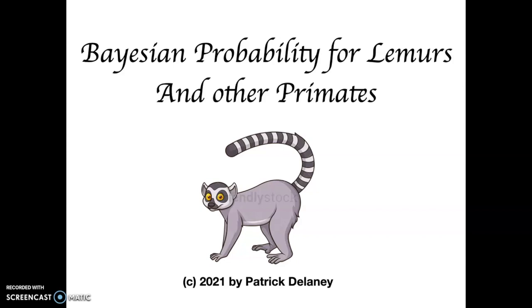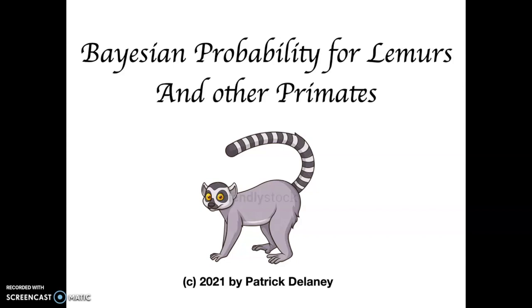Bayesian probability for lemurs and other primates. What is Bayesian statistics? First of all, it's probabilities changing over time due to the results of different experiments. Things like sports championships or medical test results such as COVID testing are some important applications.